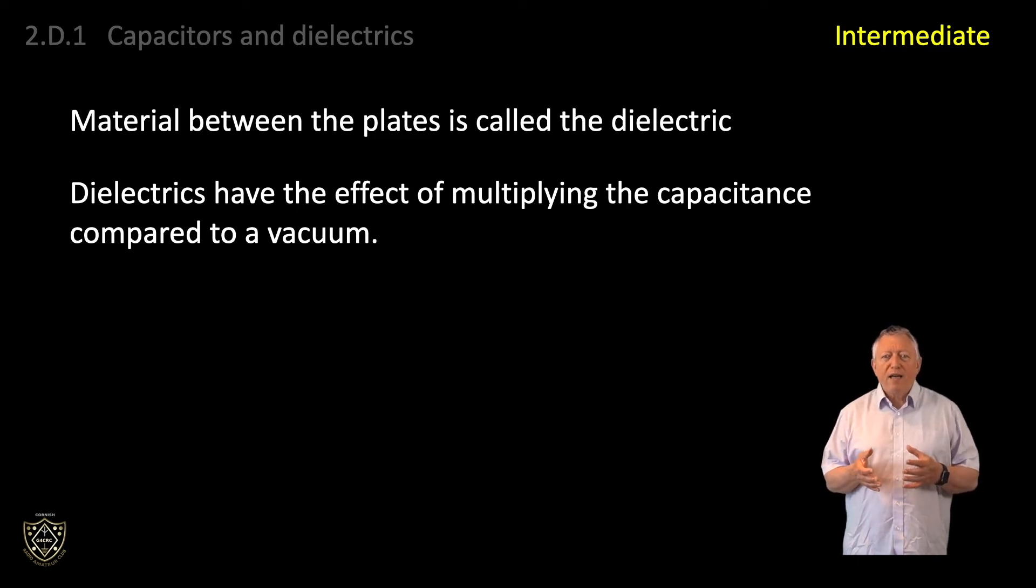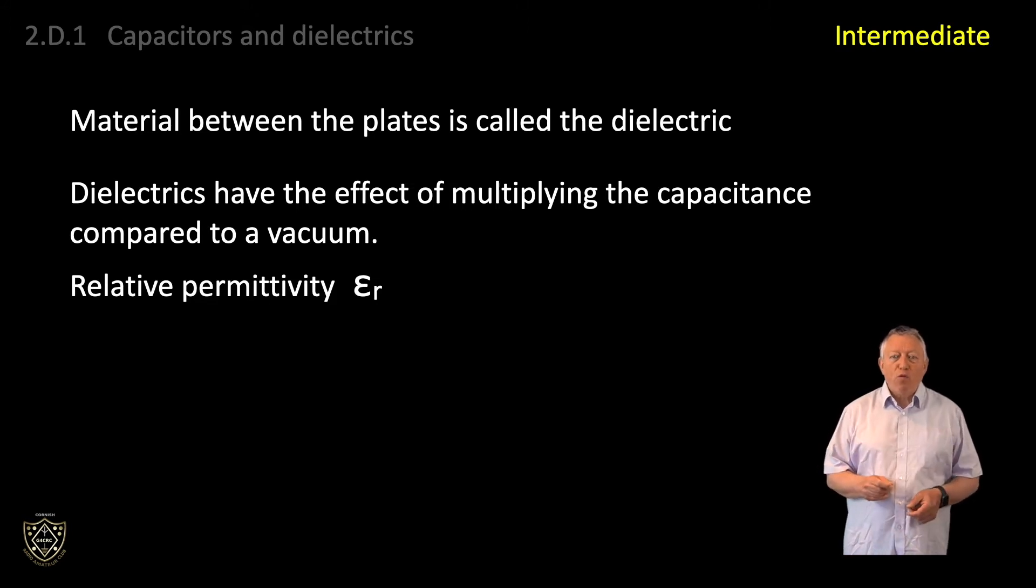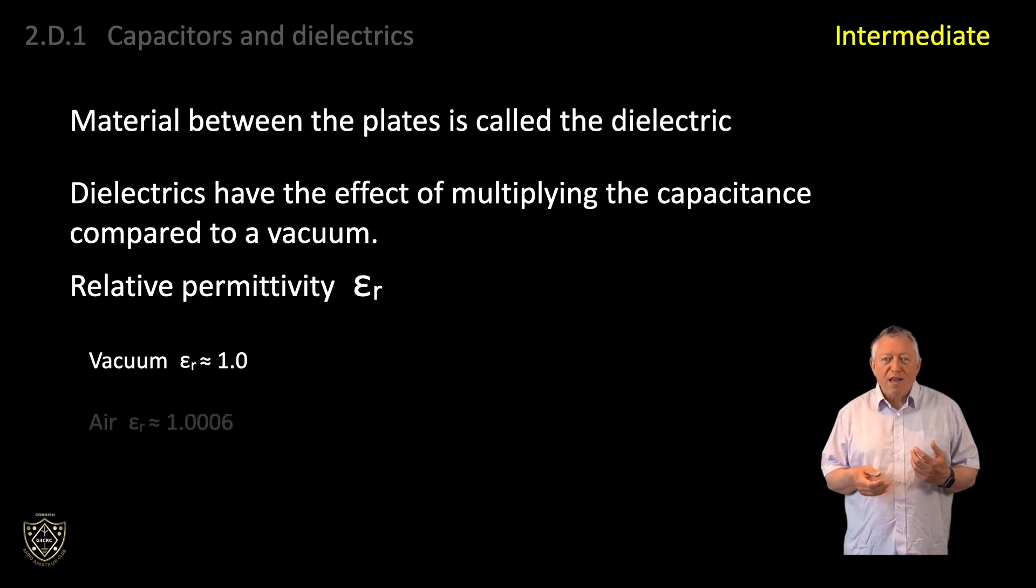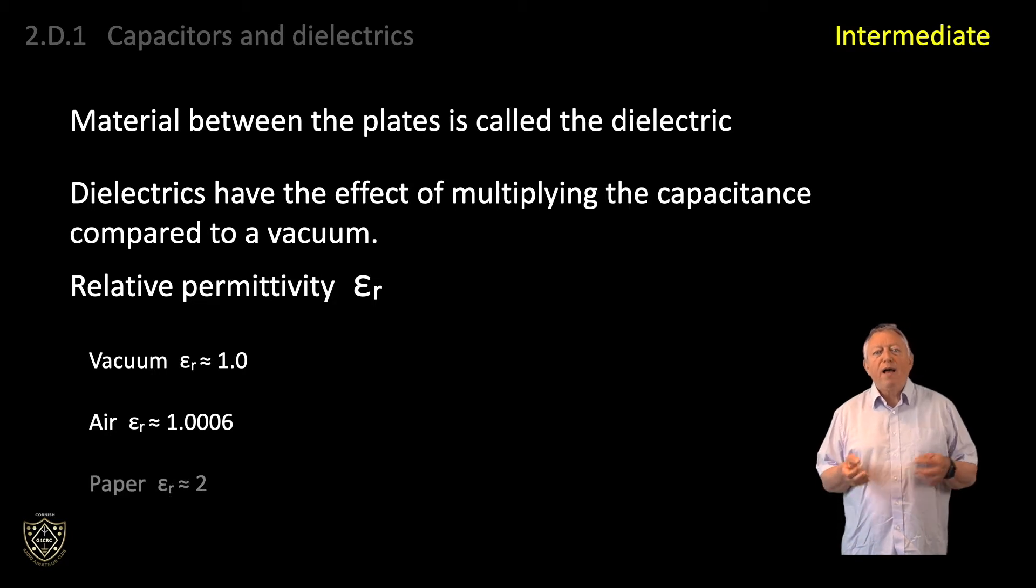This multiplication effect is called the relative permittivity, denoted epsilon r, and is of course just one for a vacuum as we are comparing a vacuum to itself. For air, epsilon r is approximately 1.0006, such a slight increase over a vacuum that for practical purposes, we normally consider it to be the same, i.e. 1. For paper, epsilon r is approximately 2, and for mica, epsilon r is approximately 4. And dielectric materials exist with relative permittivities in the thousands, but that's beyond the scope of this course.